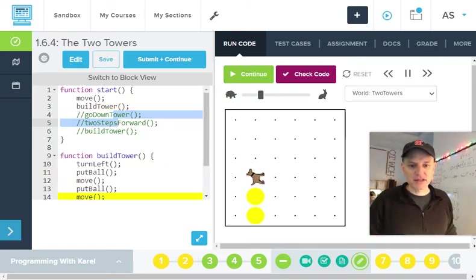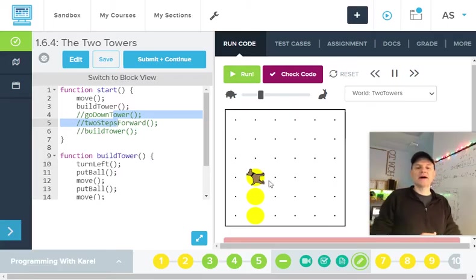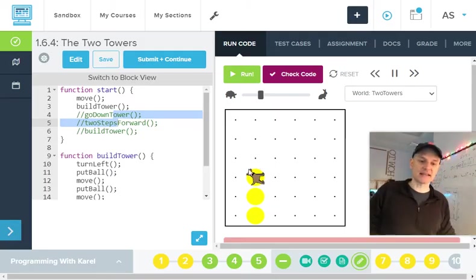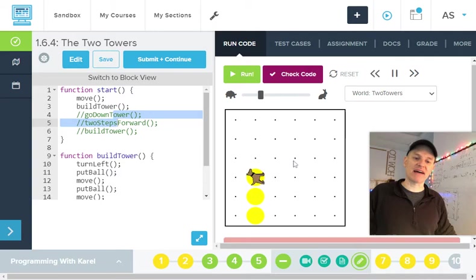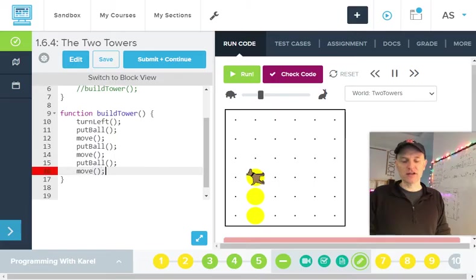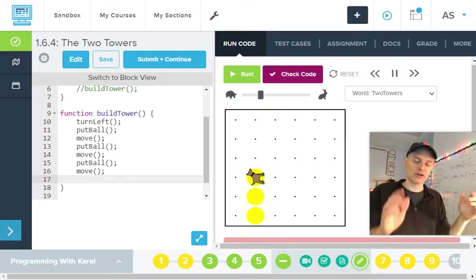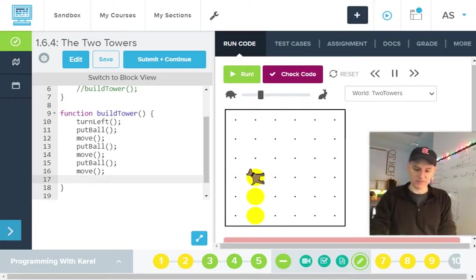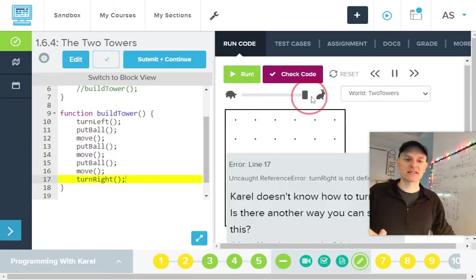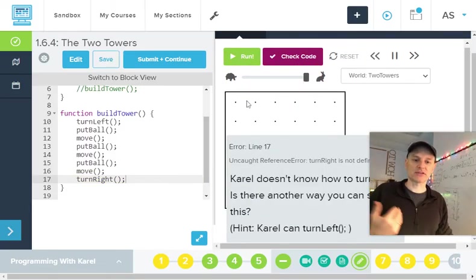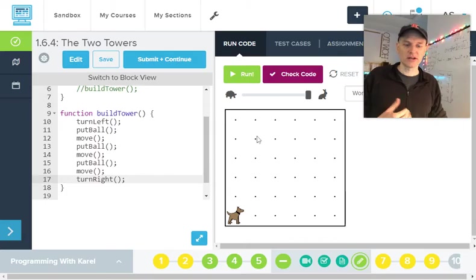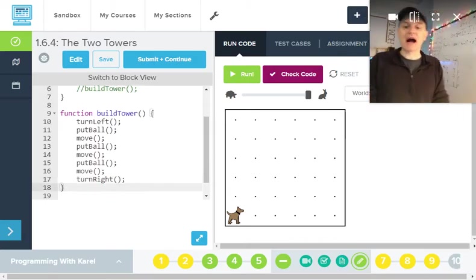So reset, run. And build tower is looking okay. All right. But I want to end, I'm going to be able to use this build tower function again for the second tower. So I want to end sort of how I expect to end after building this last tower. So after I put that last ball, I'm going to move once more to get on top of the tower. And then I want to turn right. So I'm going to type turn right. But remember, that's not one of the built in commands. So if I run that, speed this up, Carol doesn't know how to turn right. Carol can turn left. Of course, I knew that already. So can I make that go away? No. Okay. So I'm going to define turn right.